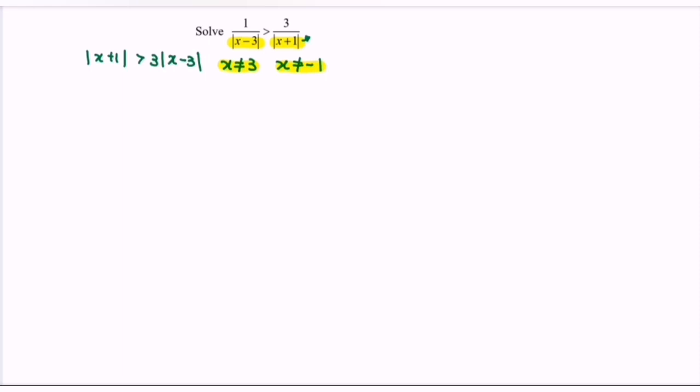Next, refers to the situation where we have to square both sides. If we square both sides we will have (x+1)² greater than 9(x-3)².